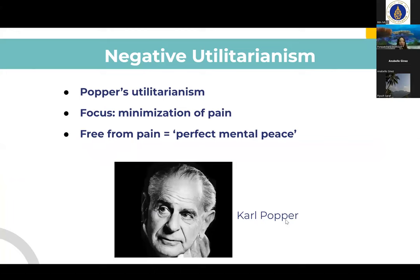Negative utilitarianism is a theory that differs from classical utilitarianism, as the focus should be on the minimization of negative well-being rather than the maximization of pleasure. Harper's version of utilitarianism comes with the claim that when we are free from pain, we enter into a state of perfect mental peace. An example is when we take medicine to reduce pain when we have a headache, or the way we wear seatbelts to help prevent serious injury when driving.